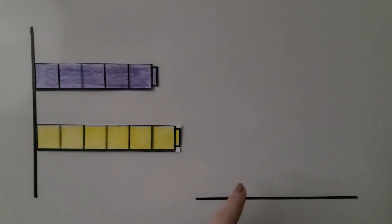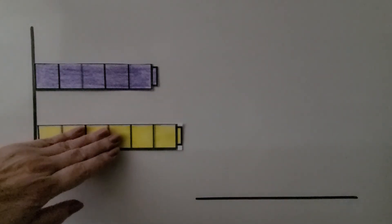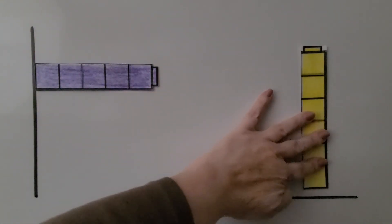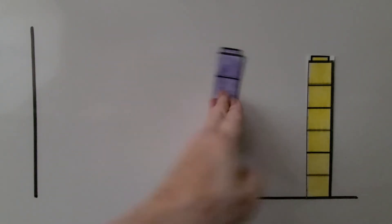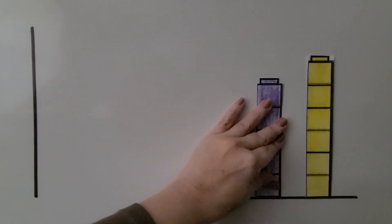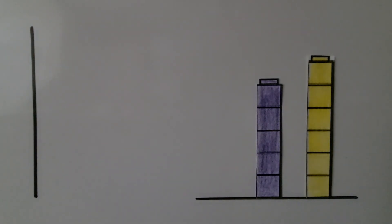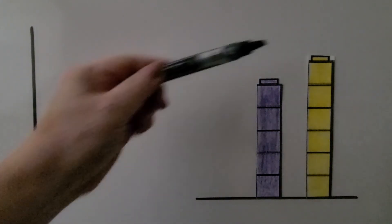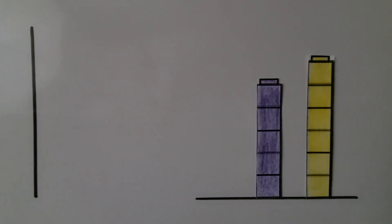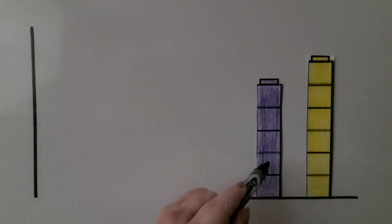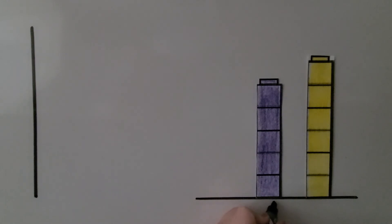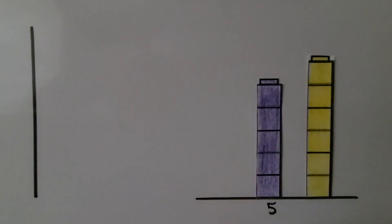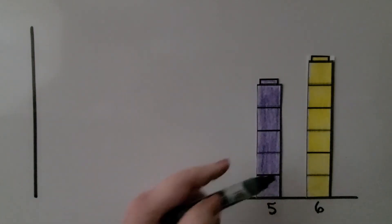What would happen if we lined them up on a horizontal line? If we moved them, would the purple one still be shorter? Yes, the purple one is still shorter. The shorter cube tower will have fewer cubes — this one has five cubes, and the yellow one has six cubes. The purple tower has fewer cubes, so it's shorter.